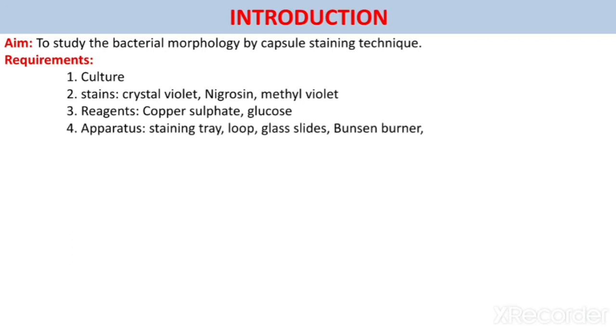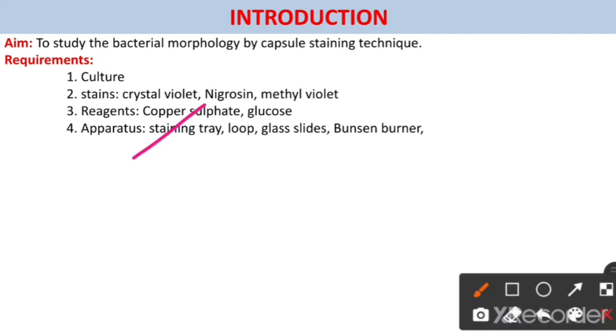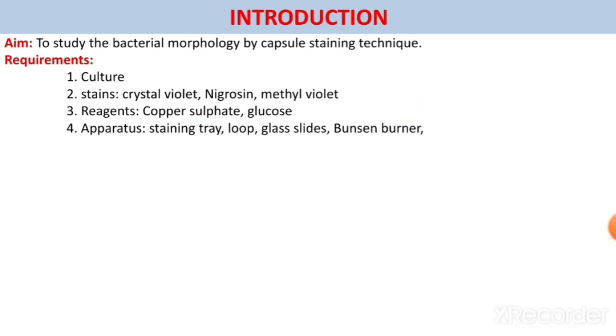Apparatus used: staining tray which is used during the staining, nichrome wire loop which is used to transfer the culture, glass slides used during the staining, and Bunsen burner to maintain the sterilization. And equipment, that is the microscope. Microscope is used to observe the capsule staining under 100x.